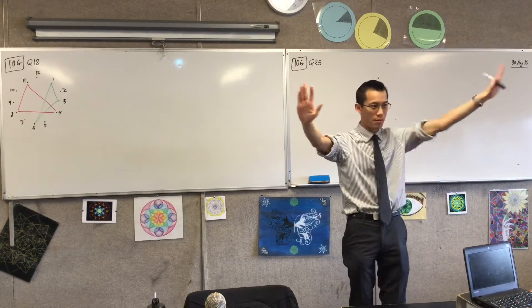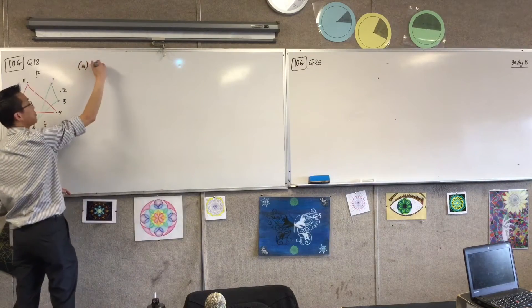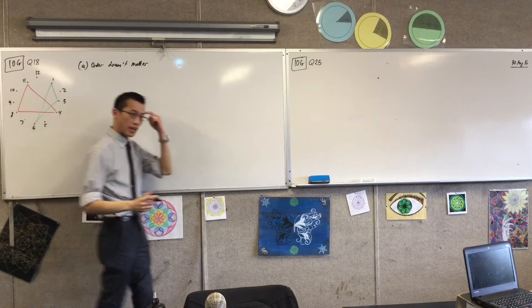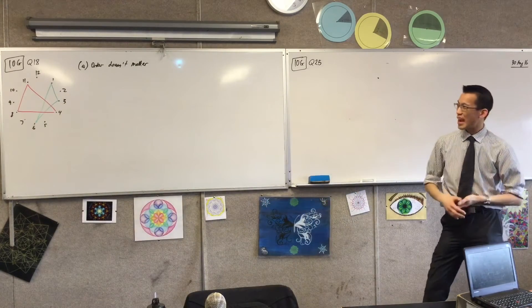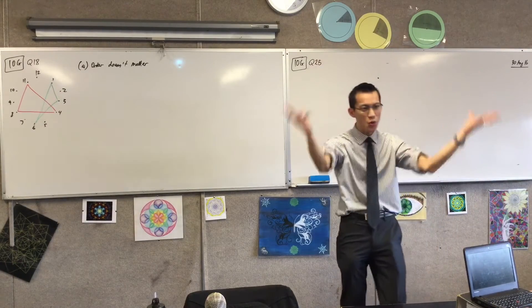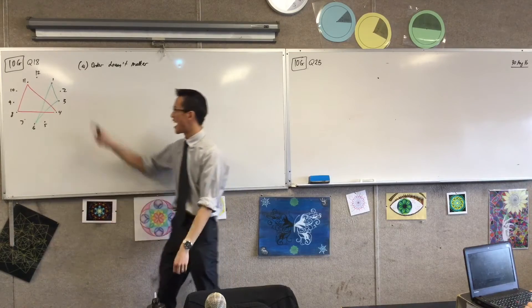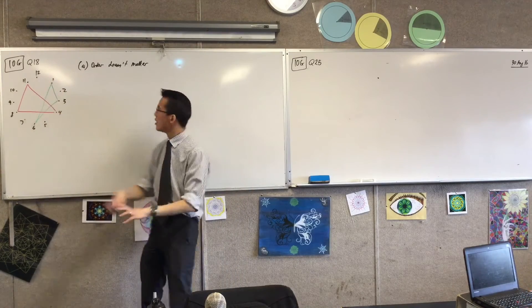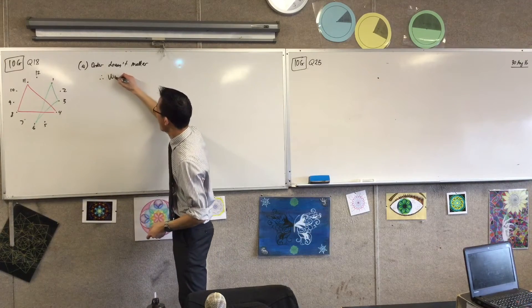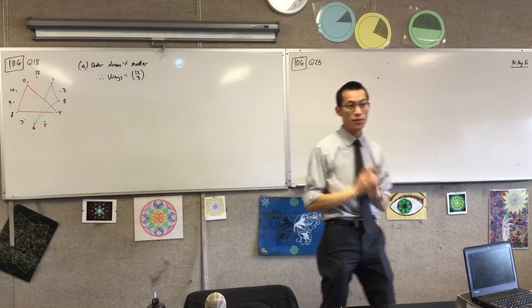So therefore am I in permutations territory or combinations territory? Combination, very good, order doesn't matter. When I realize this is about something choose something, this is like an NCR type problem. How many choices do I have to choose from? There are 12 choices and of those 12 I have to pick out any three. So therefore if order doesn't matter I've got 12 and I have three of them, so the number of ways is just going to be 12C3. That's the number of triangles I can make.